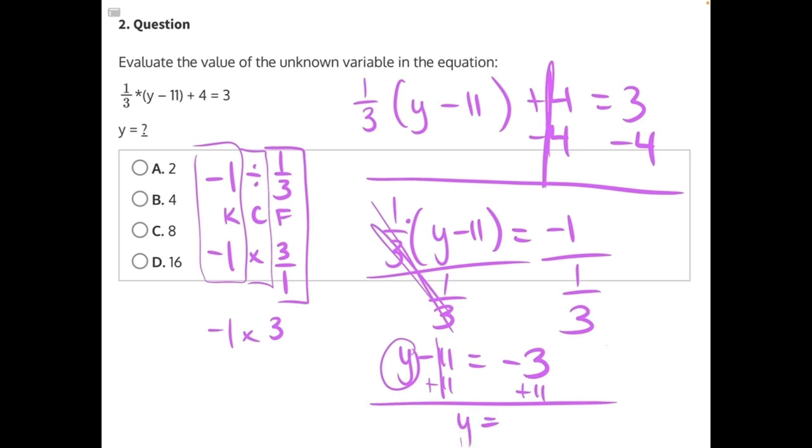Adding a negative is the same as subtracting a positive. So we can treat this like 11 minus 3, which gives us 8, making C our correct answer.